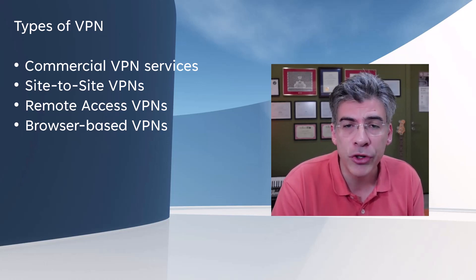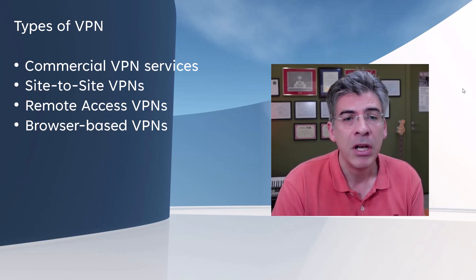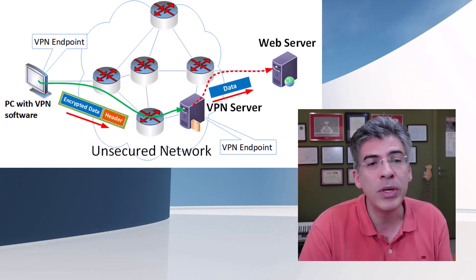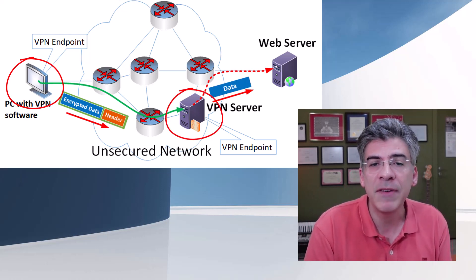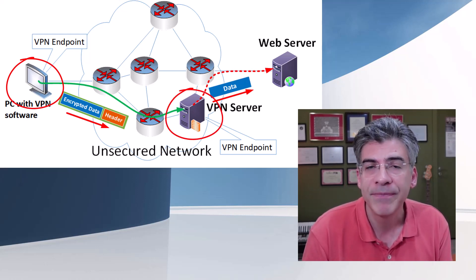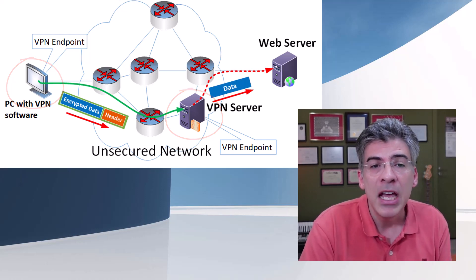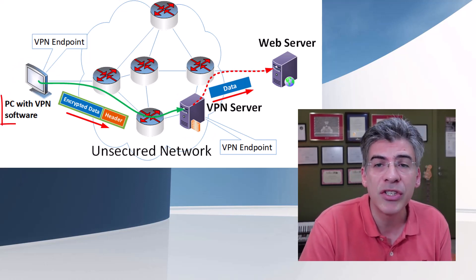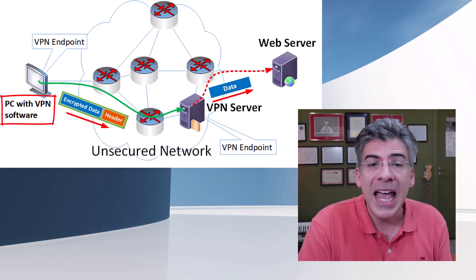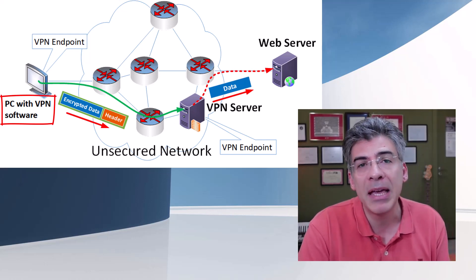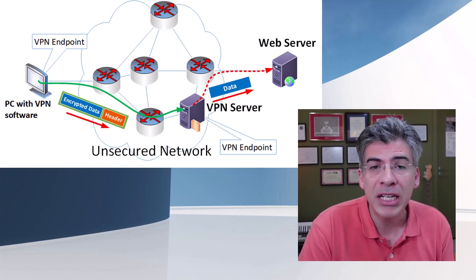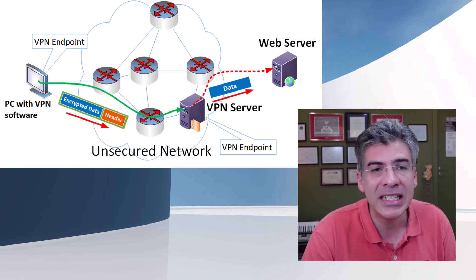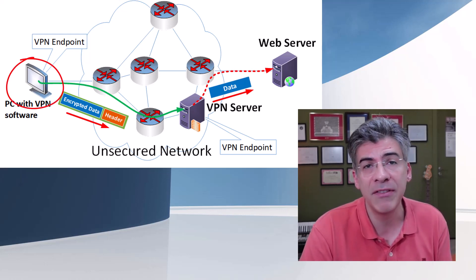Let's first take a look at commercial VPN services. Commercial VPN services are those that deliver encryption and tunneling between your end device and a server that the VPN service provider maintains. Typically, for a monthly subscription fee, you can connect your PC or mobile device using the service's software that you download and install to any one of their servers that they may maintain worldwide. The VPN endpoints, in this case, are your device and the VPN server.